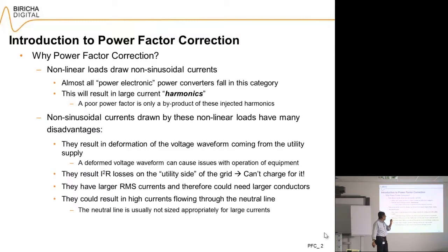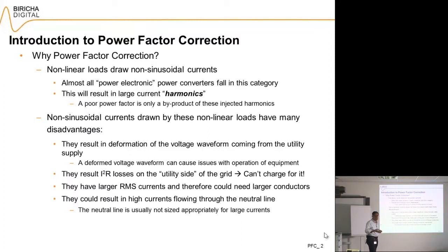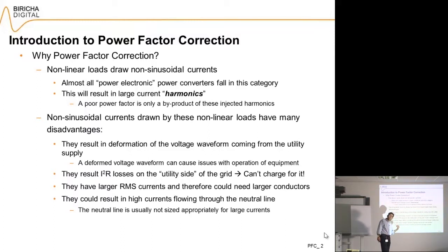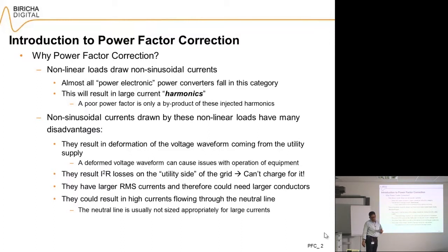These nonlinear loads result in the deformation of the voltage waveform coming from the utility supply, so you end up with a utility supply voltage waveform that is not quite a sine wave, which may damage equipment depending on how deformed it gets. They also result in I²R losses on the utility side of the grid, and the power company at the moment cannot charge for it.